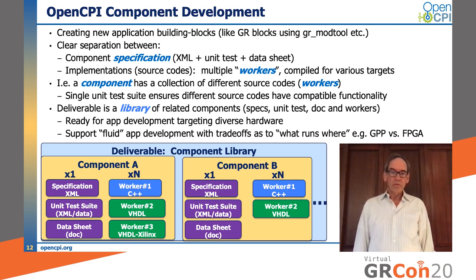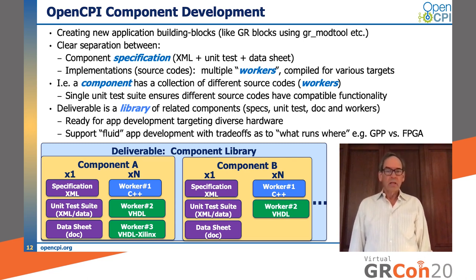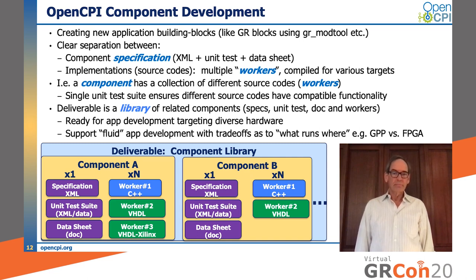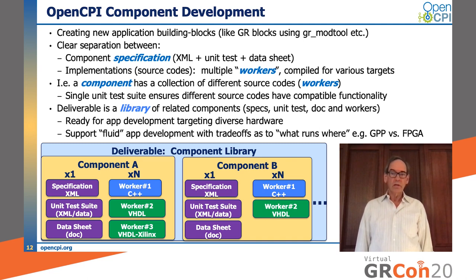It is common to have workers written in different languages for different processor types, such as C++ and VHDL. The deliverable from the component development process is a library of related components, each of which has specs, unit tests, documentation, and some workers. This creates a deliverable that is ready for application development on diverse hardware, since the components have different workers that can run on diverse hardware. The application development process can then experiment using different workers on different processors, simply by directing execution of the component to a different processor, which will automatically use the appropriate worker.